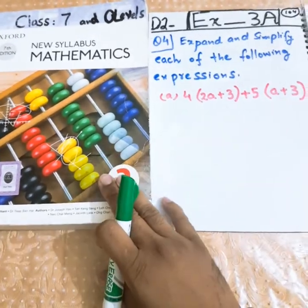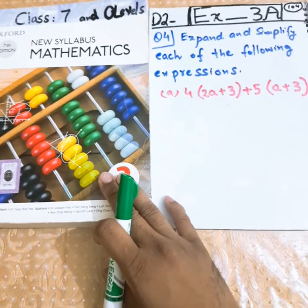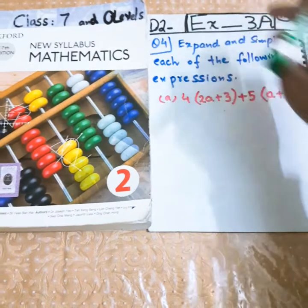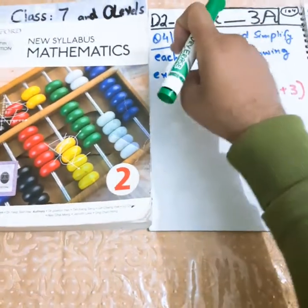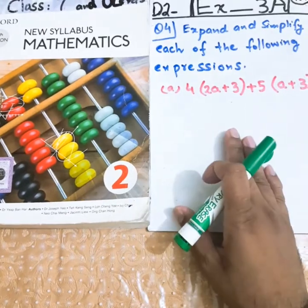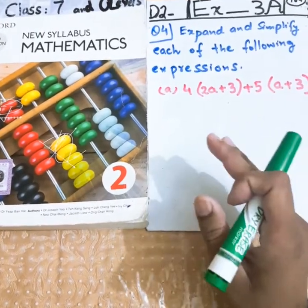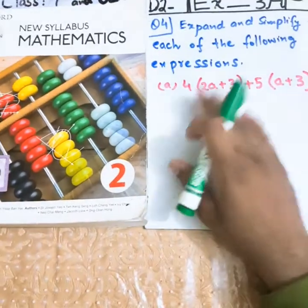Students who have this book available can open page number 104, exercise 3A. This is question number 4. I have uploaded question number 1, all parts of question number 2 and 3 as well, and now I'm going to start question number 4.